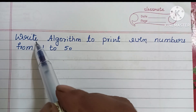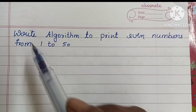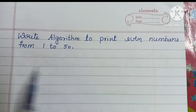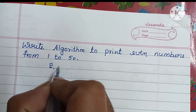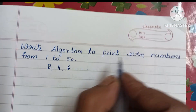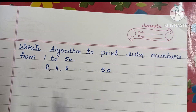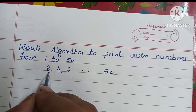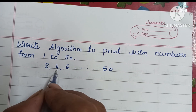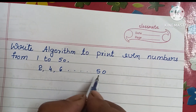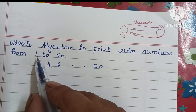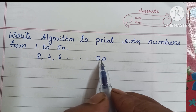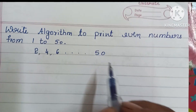In this video we are going to learn how to write an algorithm to print even numbers from 1 to 50. Even numbers start from 2, 4, 6 and so on up to 50. Our initial even number is 2, and each time it will increase by 2 — so 2 plus 2 is 4, 4 plus 2 is 6 — continuing until 50.